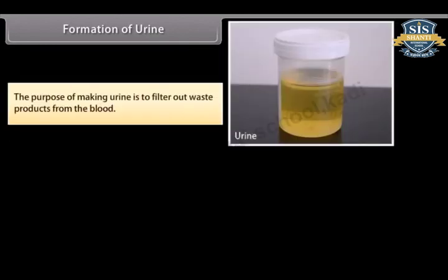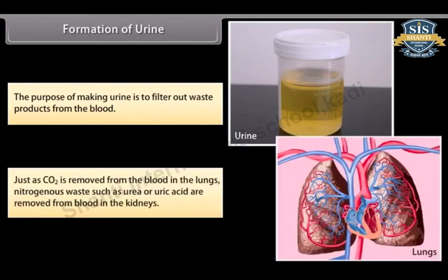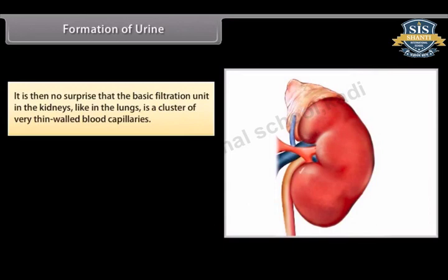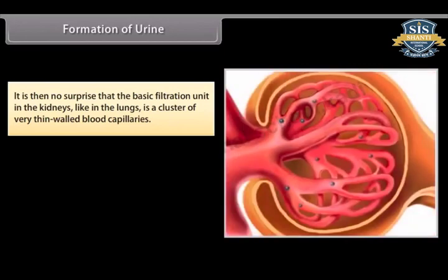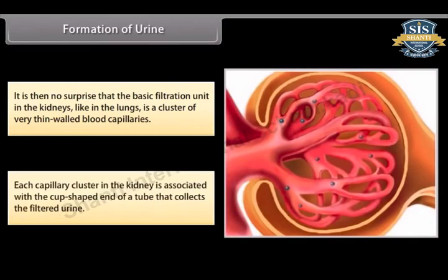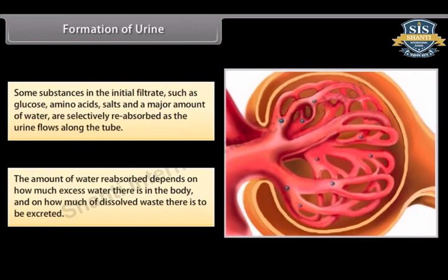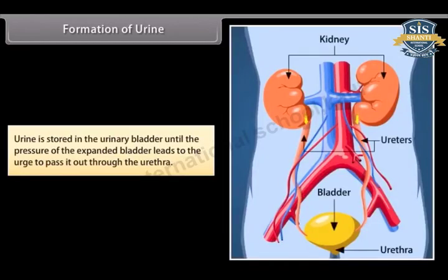The purpose of making urine is to filter out waste products from the blood. Just as CO2 is removed from the blood in the lungs, nitrogenous wastes such as urea or uric acid are removed from the blood in the kidneys. The basic filtration unit is a cluster of thin-walled blood capillaries associated with a cup-shaped tube that collects filtered urine. Substances like glucose, amino acids, salts, and a major amount of water are selectively reabsorbed as urine flows along the tube. Urine is stored in the urinary bladder until pressure leads to the urge to pass it through the urethra.